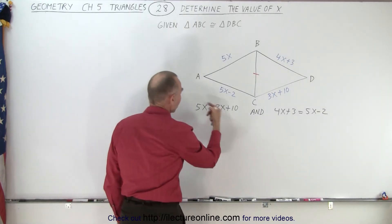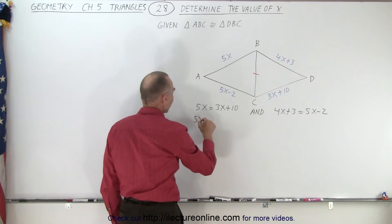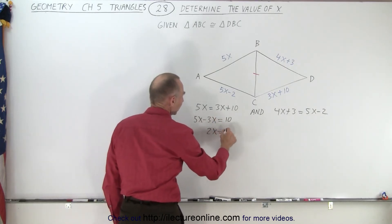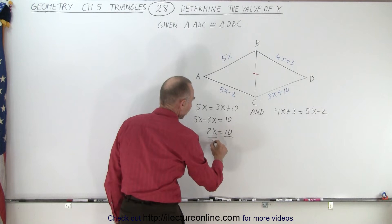Alright, first of all, on this one, we're going to subtract 3x from both sides. So we have 5x minus 3x is equal to 10. That gives us 2x is equal to 10. Divide both sides by 2. That gives us x equals 5.